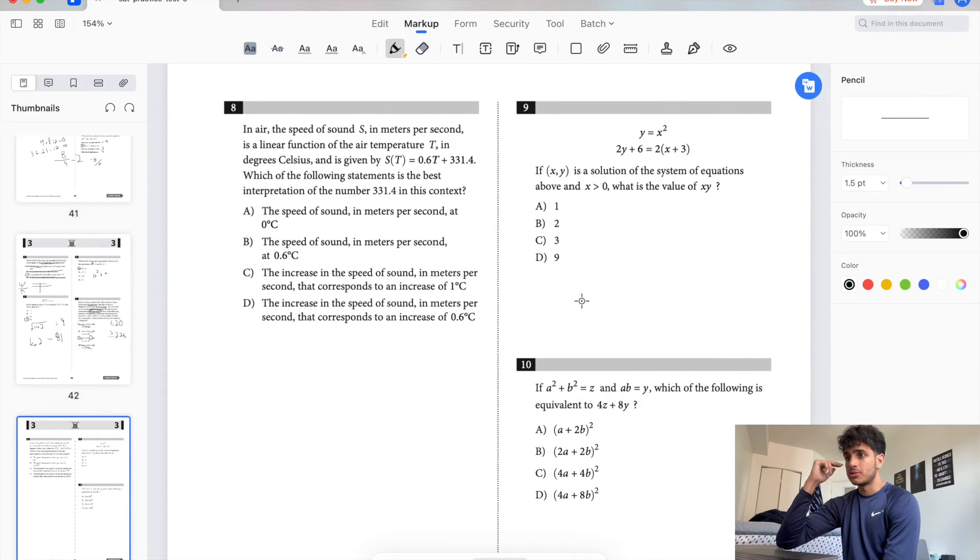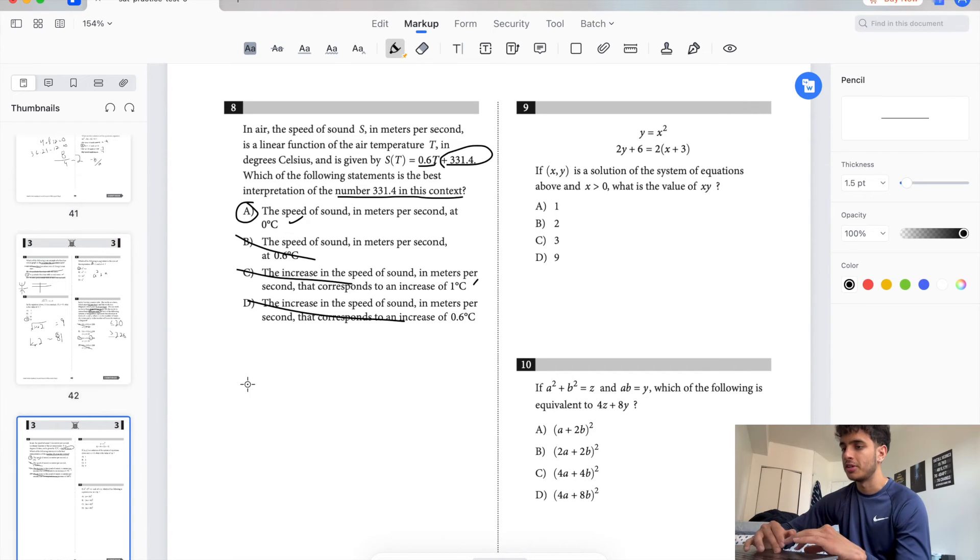In air, the speed of sound s in meters per second is a linear function of air temperature T in degrees Celsius, given by s(T) equals 0.6T plus 331.4. Which of the following statements is the best interpretation of the number 331.4 in this context? This is the y-intercept. Speed of sound in meters per second at 0 degrees Celsius, that's potentially correct. If you plug in 0, this is the answer. It's not B. The increase in speed of sound in meters per second that corresponds to the increase of 1 degree Celsius, this corresponds to 0.6, this is slope. Y-intercept means when x equals 0, when T equals 0 in this case.